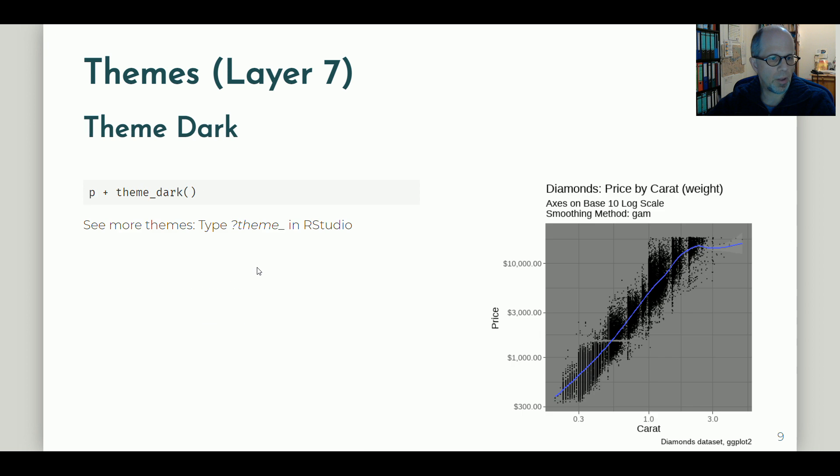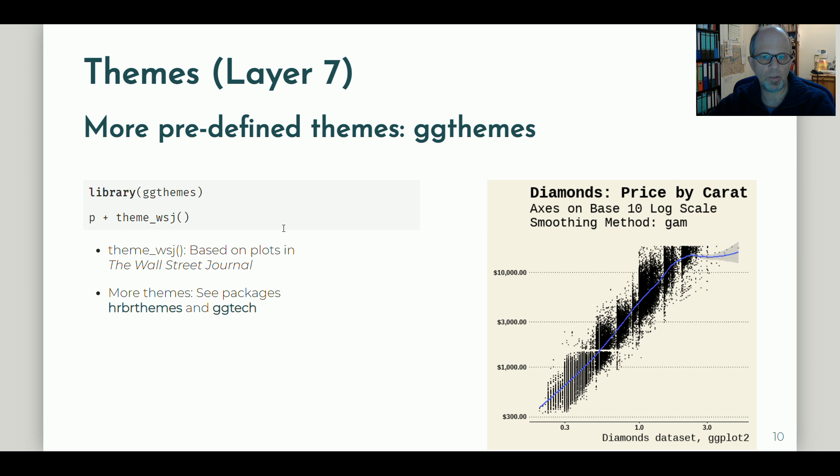There are more themes in the ggplot2 package. You can look for them using the question mark theme_function and then you get a context menu in RStudio that shows you the themes that are available. And if that's not enough, you can use extension packages. Here's an example from the ggthemes package and the plot that is in the style of the Wall Street Journal theme wsj.